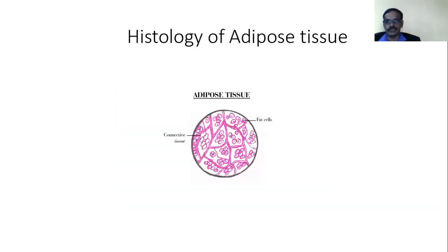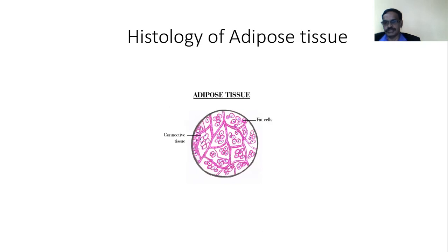The histology of adipose tissue shows adipocytes with fibers. Adipocytes have an eccentric nucleus in the periphery and the whole cell is occupied by fat. In hypothyroidism, adipose tissue is increased. Regarding cerebrum histology — various layers are present in the cerebrum, the CNS part — in hypothyroidism it is affected and there will be slow mentation, somnolence, and drowsiness, so CNS stimulants are to be given.